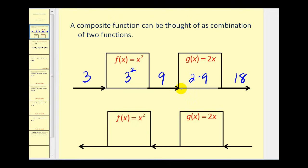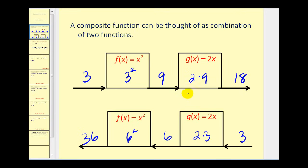Now the order in which we evaluate a composite function is extremely important. For example, if we have the same functions but now we reverse the order, and we start with the same input of three, function G would multiply that by two, producing an output of six, which becomes the input into F, and six squared would be thirty-six. So notice, if we change the order in which we compose functions, the outputs, in most cases, will be quite different, even though our inputs may be the same.